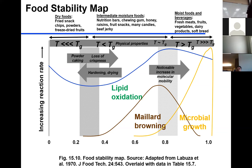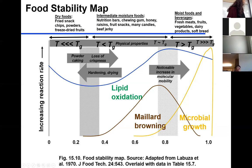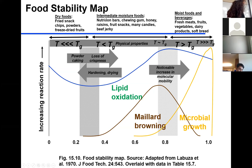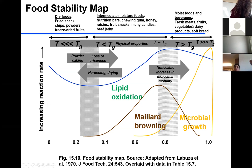Let's look at this figure. At the bottom you see water activity ranging from 0 to 1, and on the side you have the reaction rate. On top, dry foods are in the range of about 0 to 0.35–0.4; intermediate moisture foods are in the middle range; and moist foods — beverages, fresh meat, fruits, vegetables — all have water activity higher than 0.8.